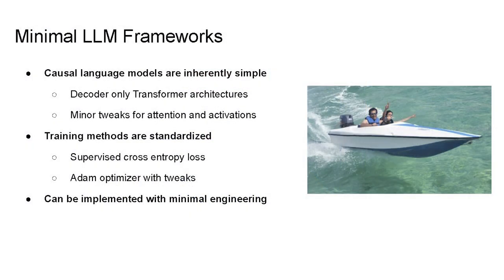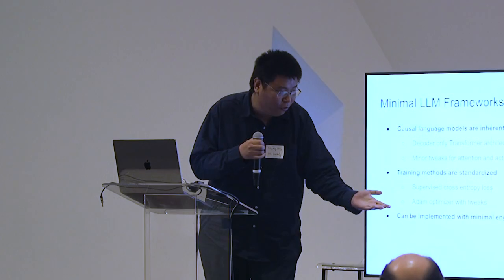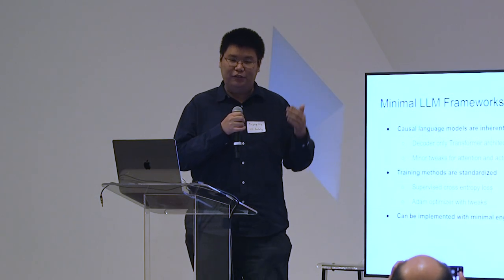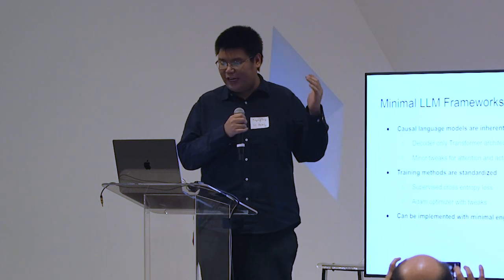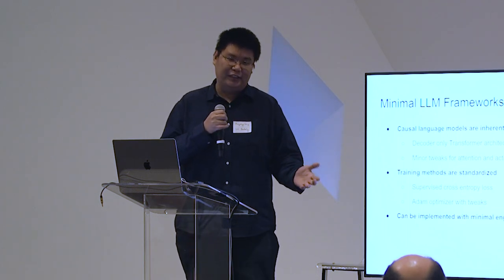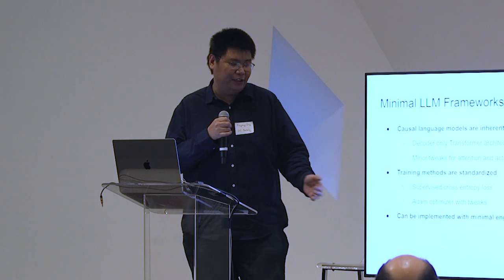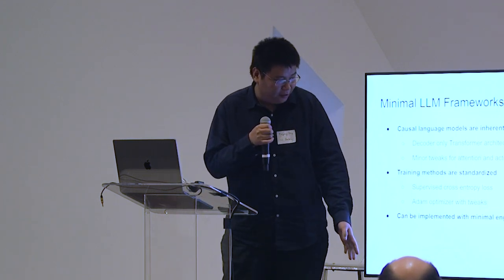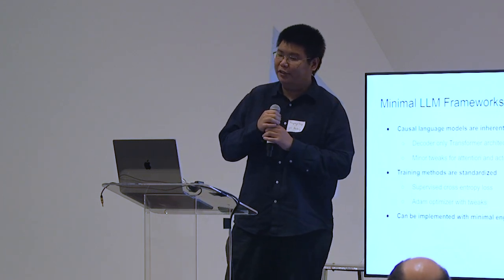If you look at these educational frameworks that are easy to use and learn, this is because causal language models are very simple. They're standardized transformer architectures with only minor tweaks. The training methods are also quite standardized — you just use supervised fine-tuning and the Adam optimizer. All of these have basic standard implementations in today's neural network libraries and only require minimal coding on the user side.